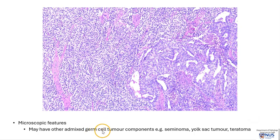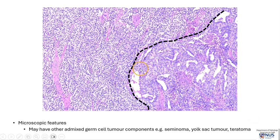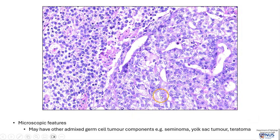There may be other admixed germ cell tumor components, for example seminoma. On the left is the area of the seminoma, and on the right is the area of the embryonal carcinoma. Roughly, this is where the demarcation is — we can see the architecture is different in the embryonal carcinoma with some gland formations, and also the cells look more pleomorphic. At higher magnification, again showing the interface between seminoma on the left and embryonal carcinoma on the right, we can see clearly that the nuclei appear more irregular, larger, and more pleomorphic on the right.